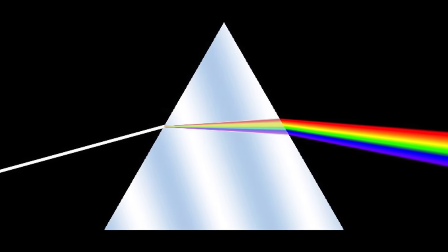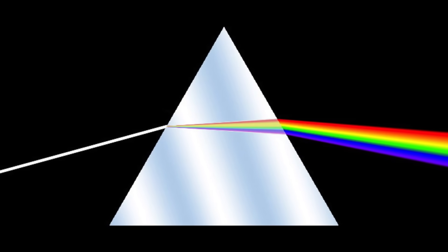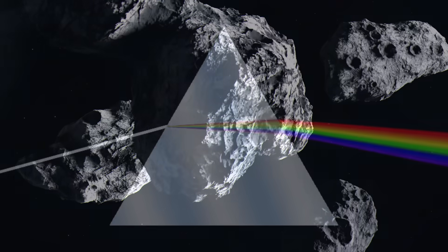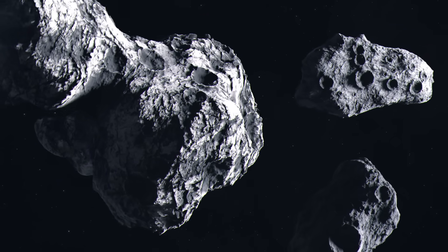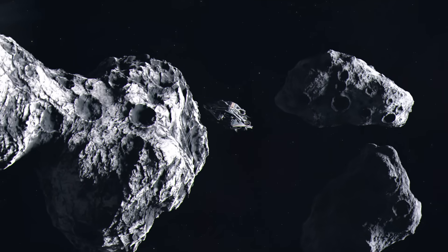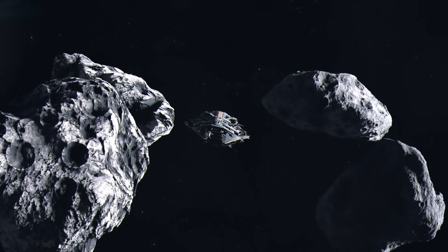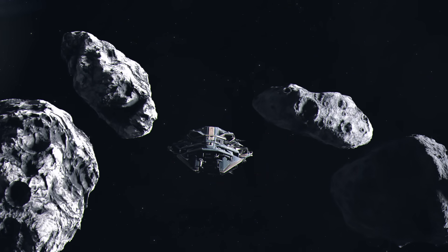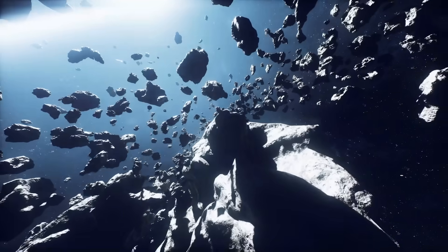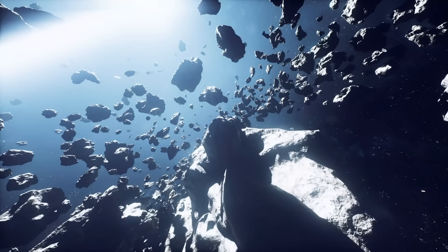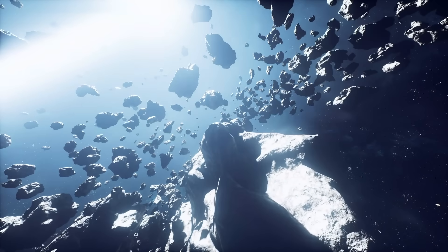Their composition only deepens the mystery. Spectroscopy has revealed signatures of metals like nickel and cobalt, as well as alloys unknown in natural comets. Ordinary comets are made of ice, rock, and dust. To find exotic metals in such high concentrations is highly unusual. Some argue these are just fragments of the comet itself. But others disagree.